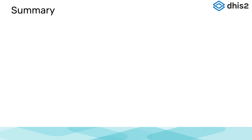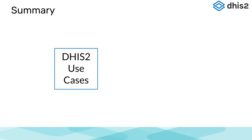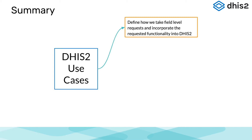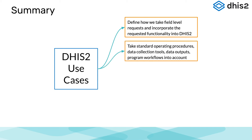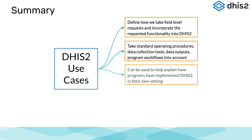Let's review the principles we have discussed in this presentation on use cases. When we talk about use cases in the context of DHIS-2, we use them to define how we take field-level requests and incorporate the requested functionality into DHIS-2. We often review a number of SOPs, data collection tools, data outputs, and program workflows in order to understand how the program works in practice. We can also use them to explain how programs have implemented DHIS-2 in their own setting. This can be particularly useful for subject matter experts who may not be DHIS-2 experts.